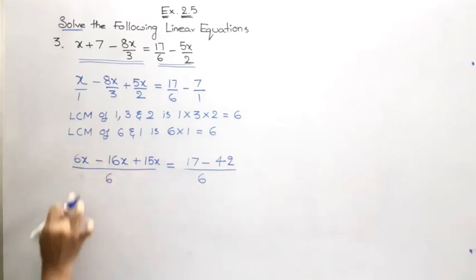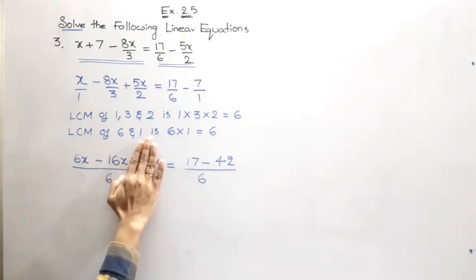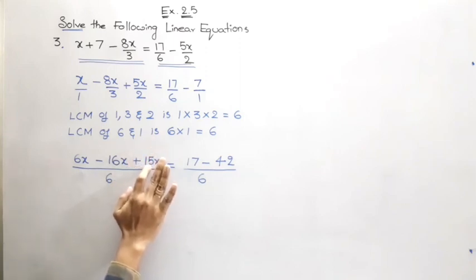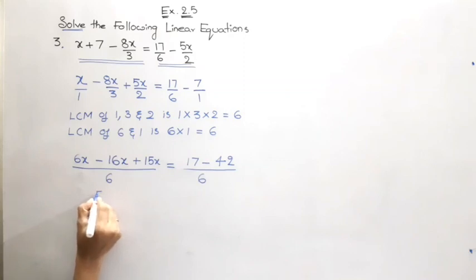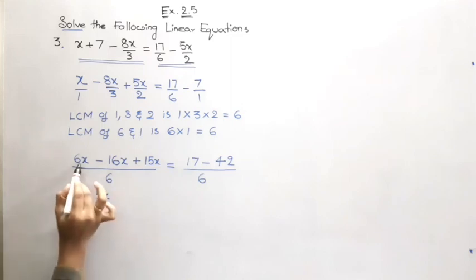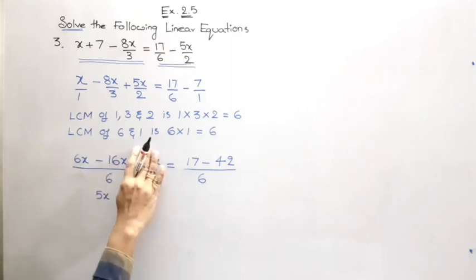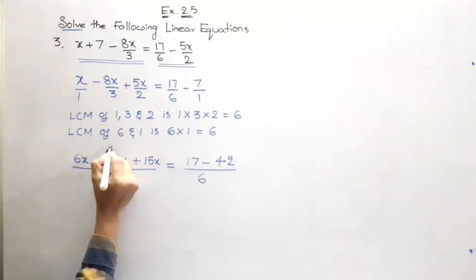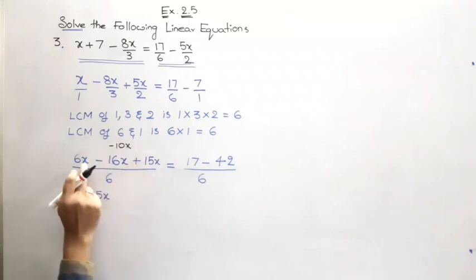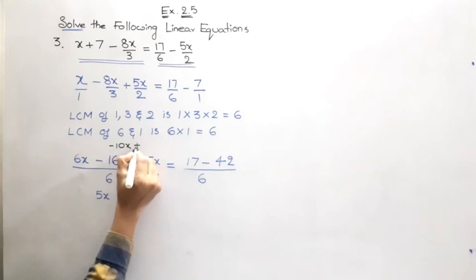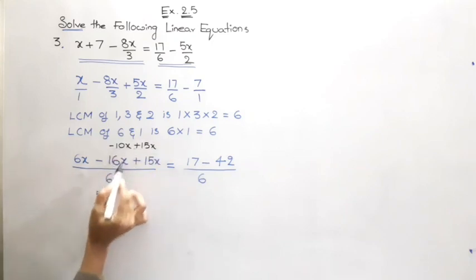Now all our like terms here—6x minus 16x plus 15x. First 6x minus 16x is minus 10x. Minus 10x plus 15x is 5x. Look, 6x minus 16x is minus 10x. That means the result of these two, and the third term we have is plus 15x. Minus 10 plus 15 is 5. Hence we got 5x.